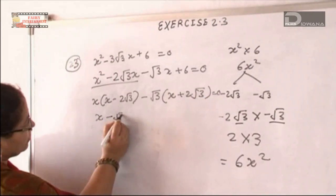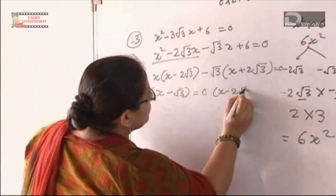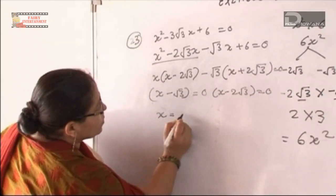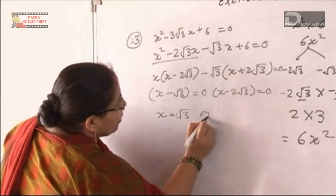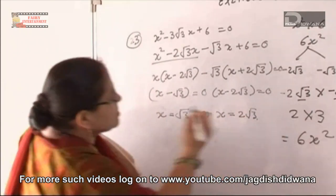So (x - 2√3) = 0 or (x - √3) = 0. Therefore x = √3 or x = 2√3. This is the answer.